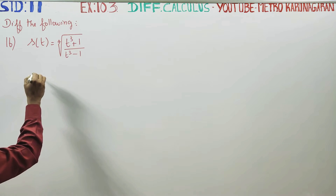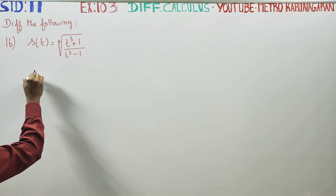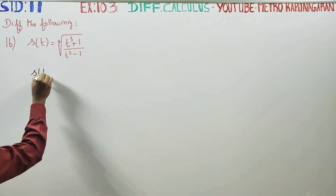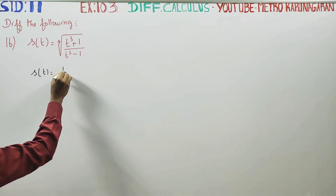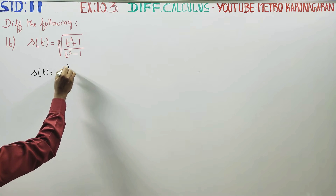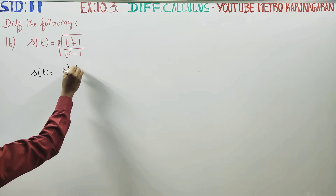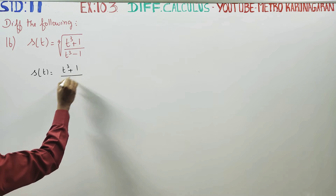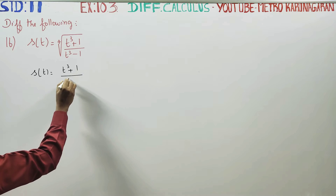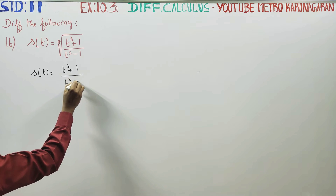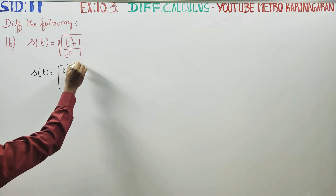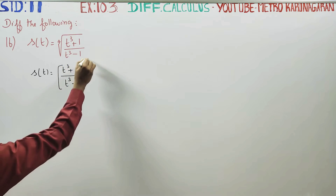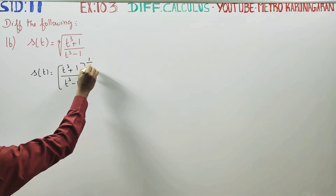Step 1: we write s of t as t cubed plus 1 divided by t cubed minus 1, all raised to the power 1 by 4.